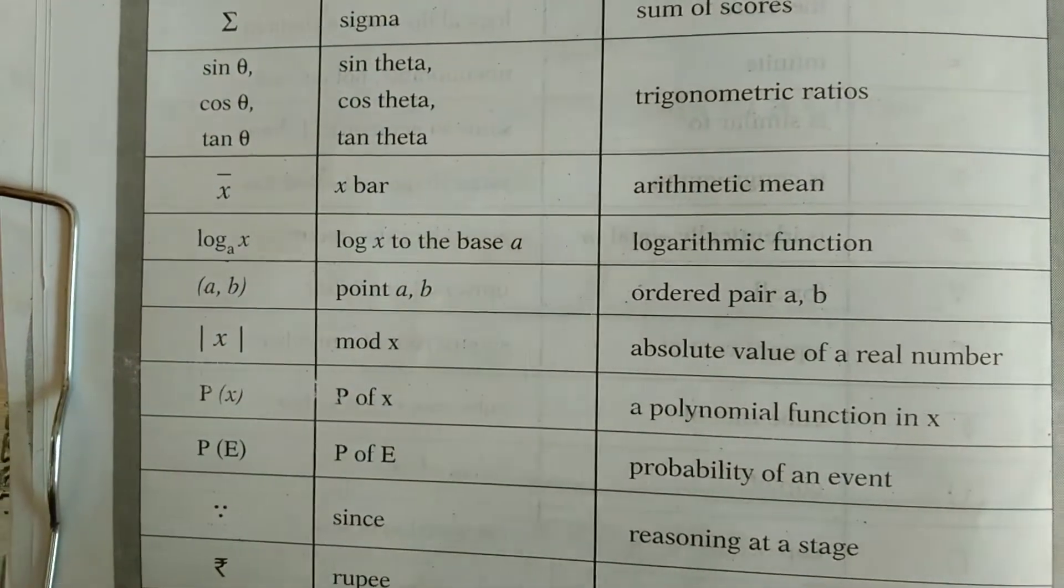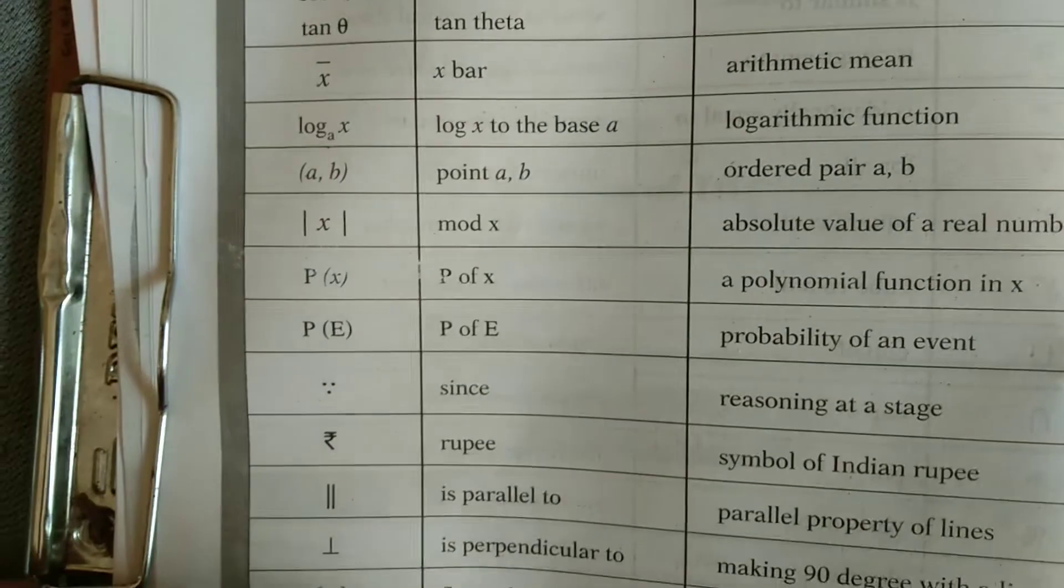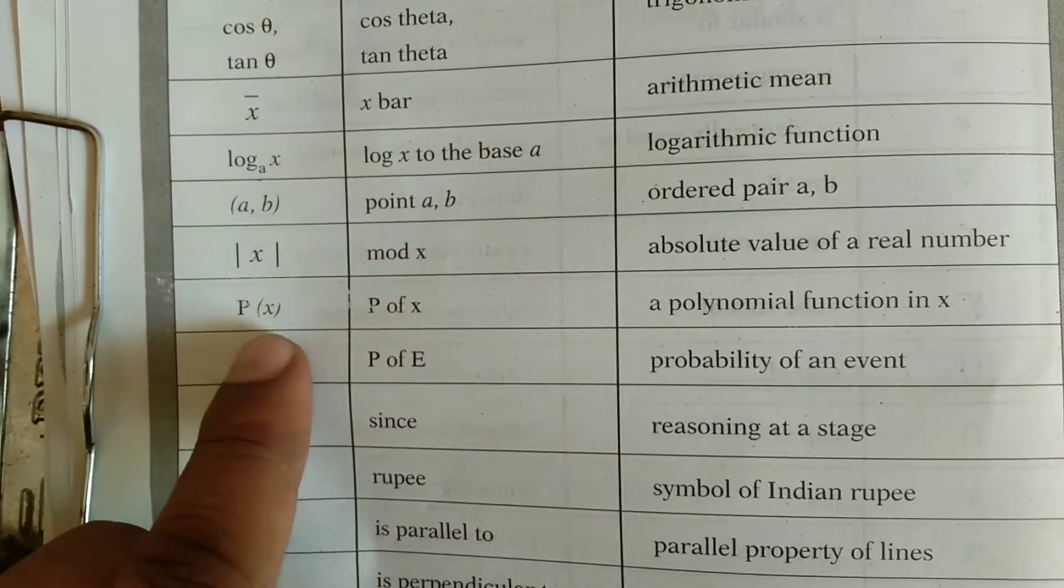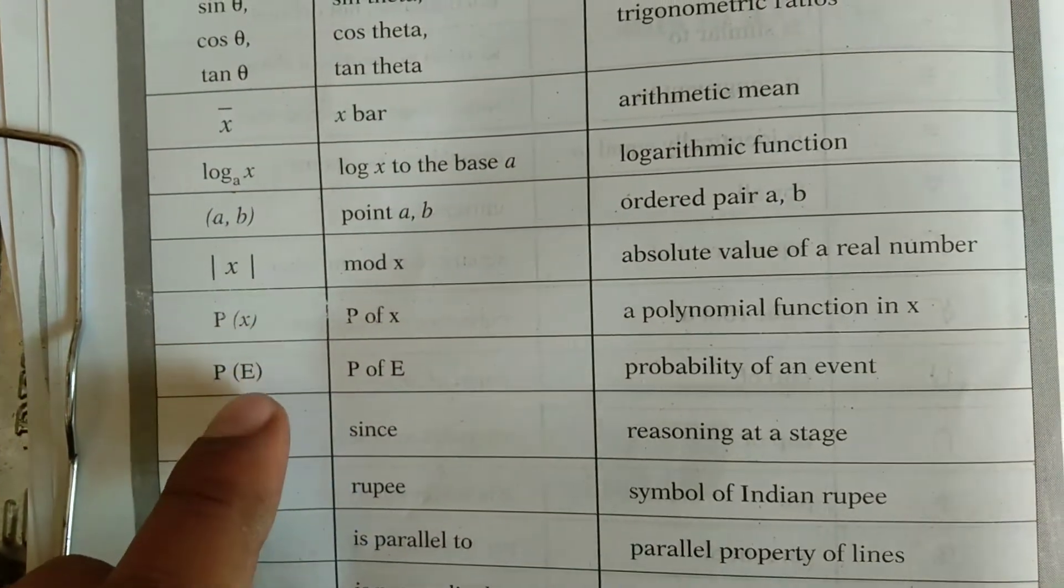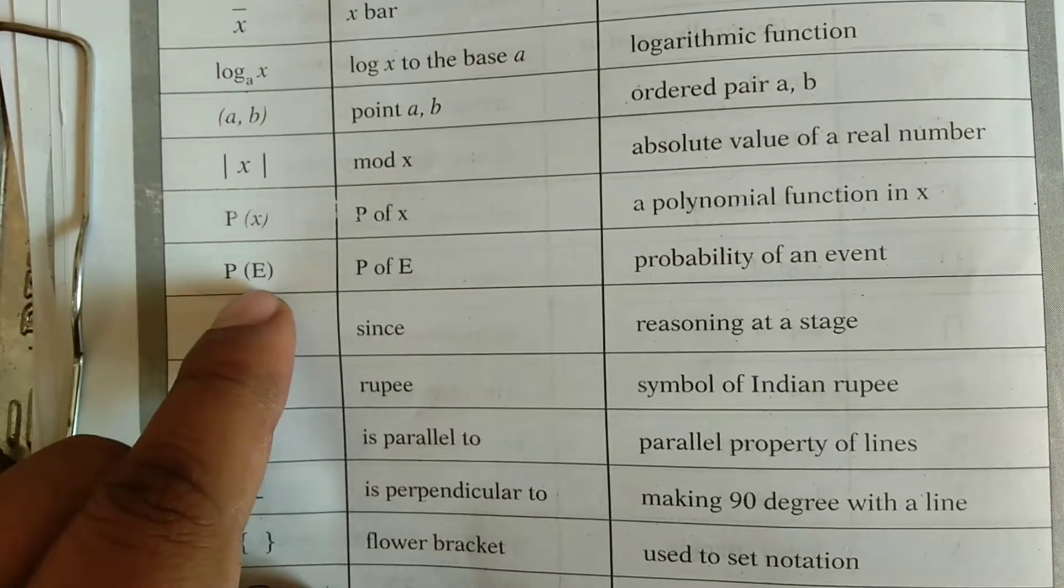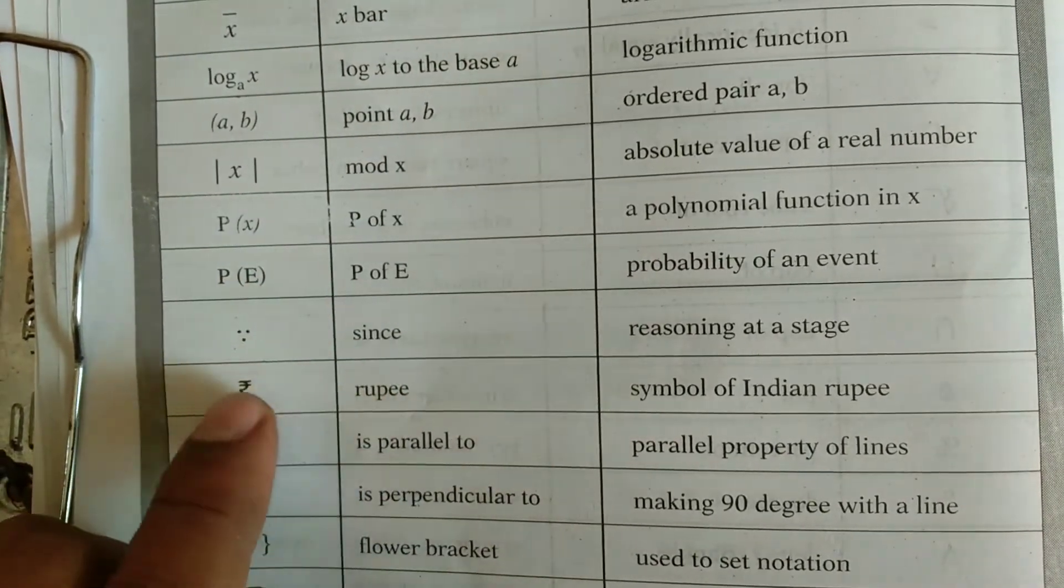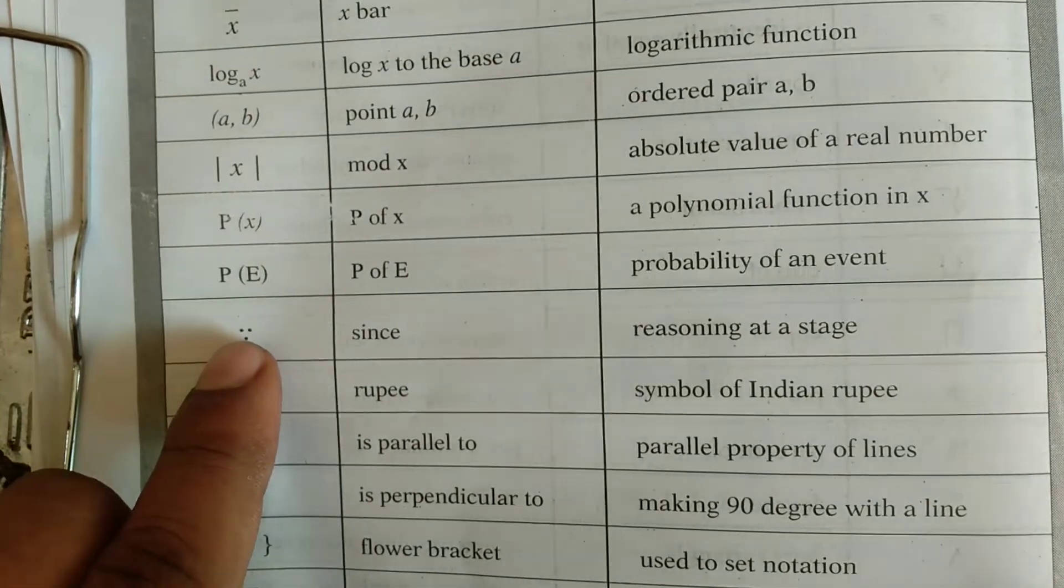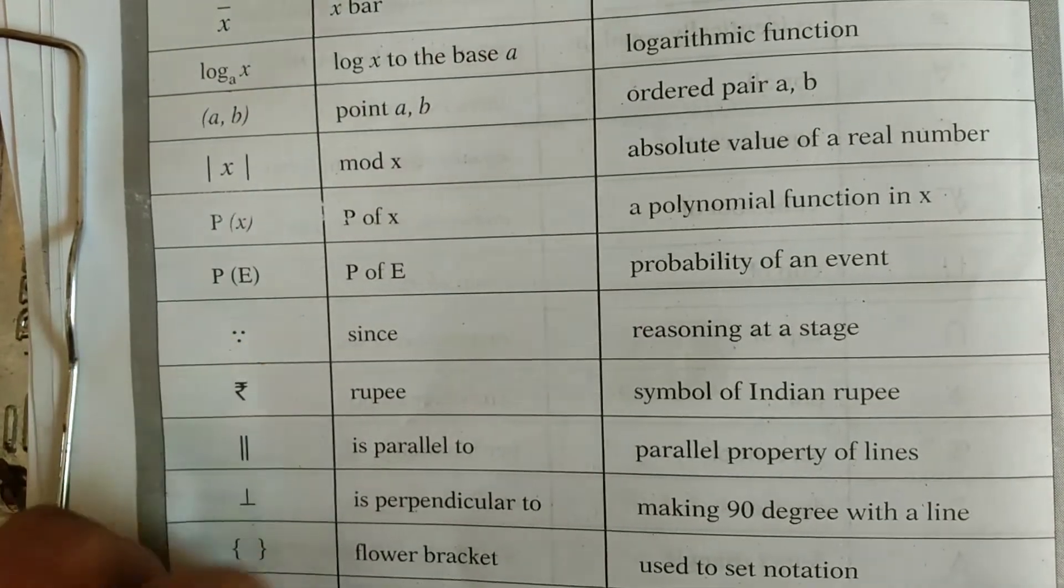Then, P of x, a polynomial function in x. Then, P of E, probability of an event. This is since, reasoning at a stage.